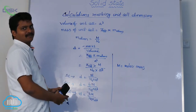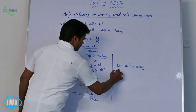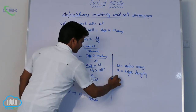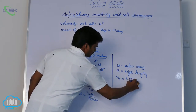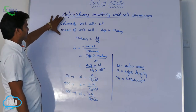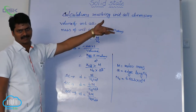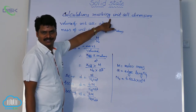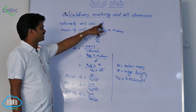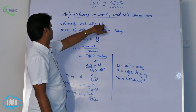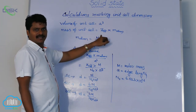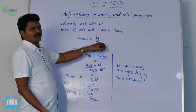Molar mass means gram atomic weight or gram formula mass. A is the edge length, determined from X-ray diffraction analysis. N₀ is Avogadro's number, with a value of 6.023 × 10²³. By substituting these values you can calculate the density. To summarize: using unit cell dimensions we calculate volume (A³), mass of unit cell using Z_eff and atomic mass divided by Avogadro's number, and from these we get the density of the unit cell.